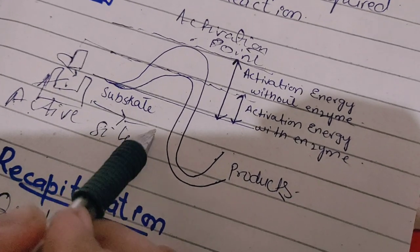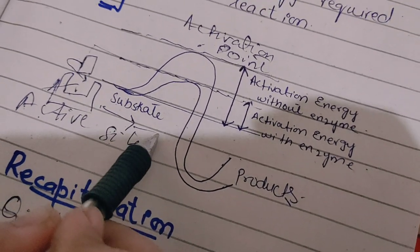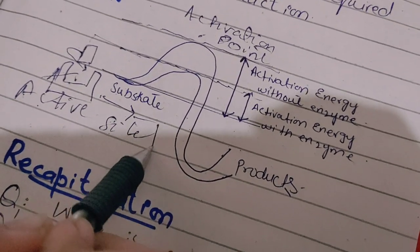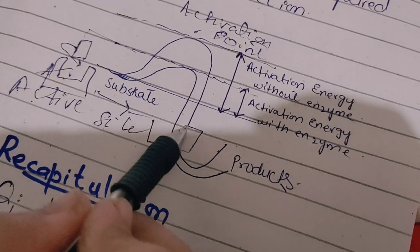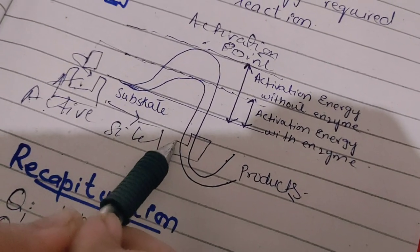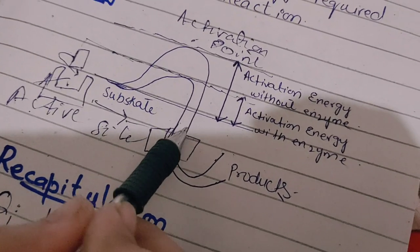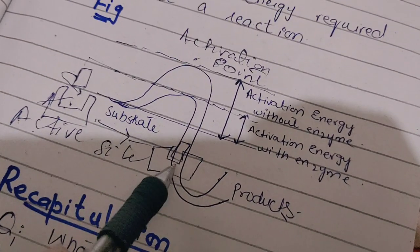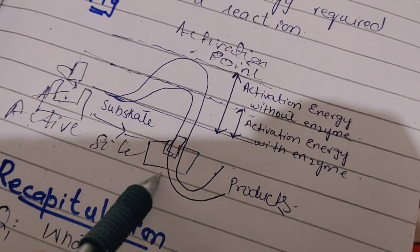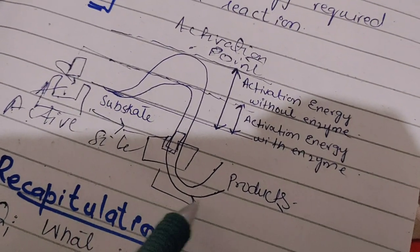In the second step, the substrate attaches with the active site, and in the next step, the active site processes the substrate and converts it into products.